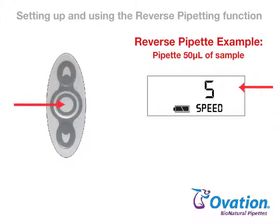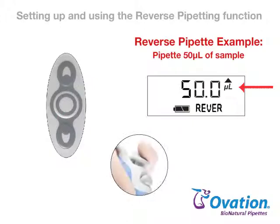Press and release the round button to lock in the speed setting and exit setup. You can now aspirate the sample by pressing and releasing the pipetting trigger. Press and release the pipetting trigger again to dispense the sample.